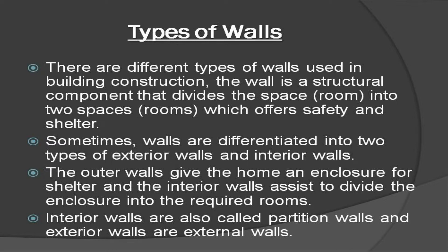There are different types of walls used in building construction. The wall is a structural component that divides the space into two spaces, which offers safety and shelter. Sometimes walls are differentiated into two types: exterior walls and interior walls. The outer walls give the home an enclosure for shelter, and the interior walls assist to divide the enclosure into the required rooms. Interior walls are also called partition walls, and exterior walls are called external walls.